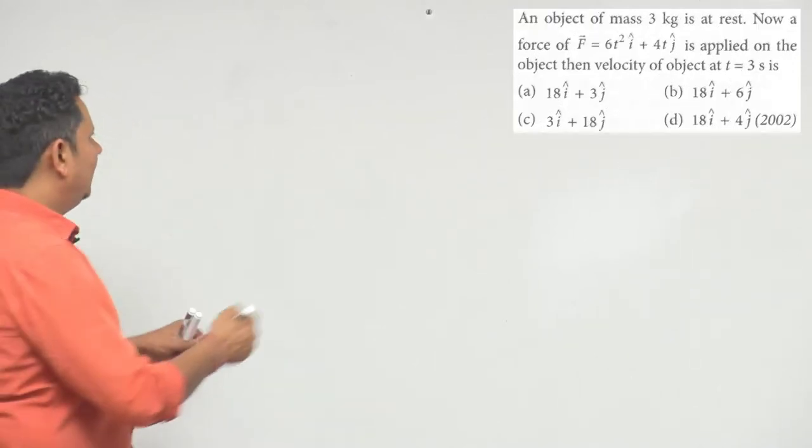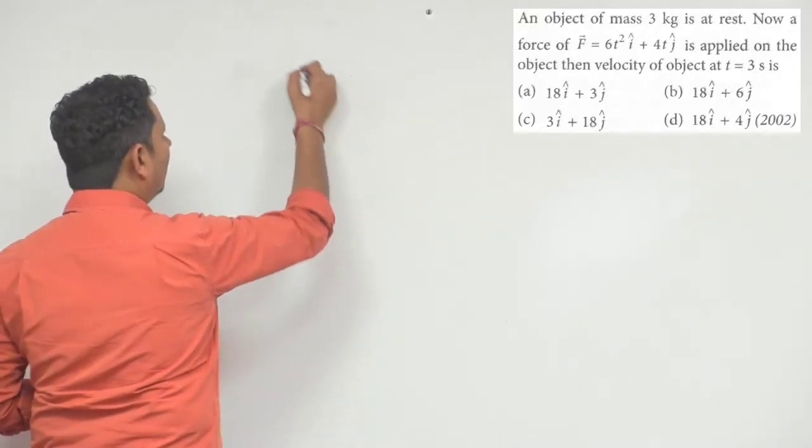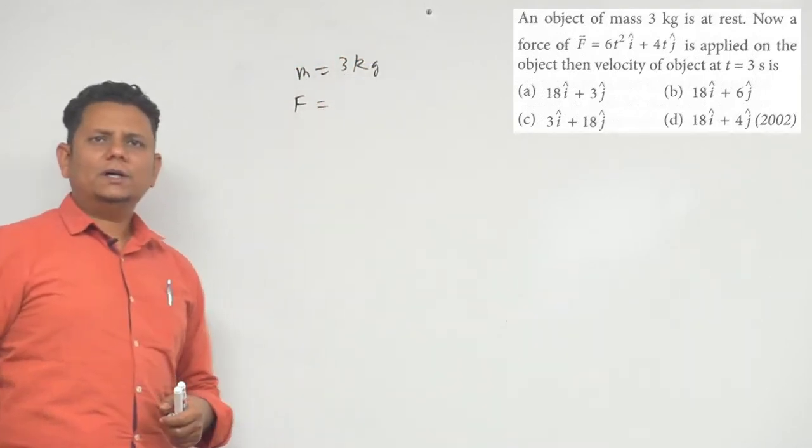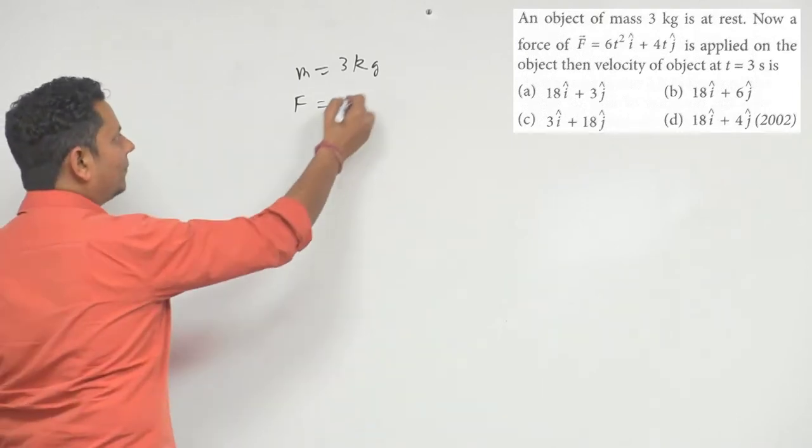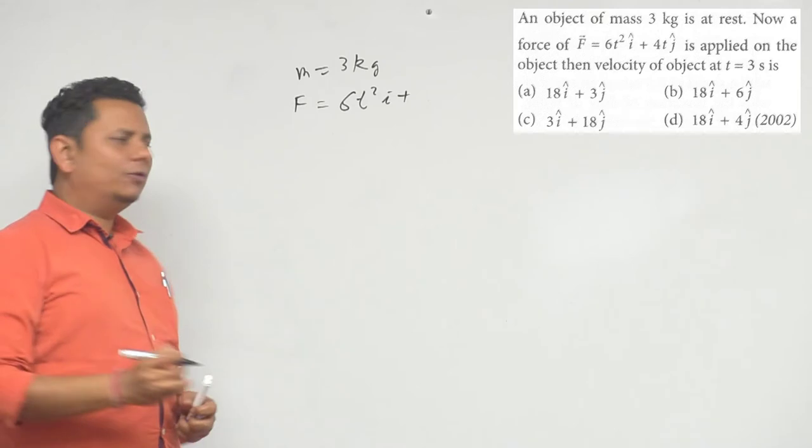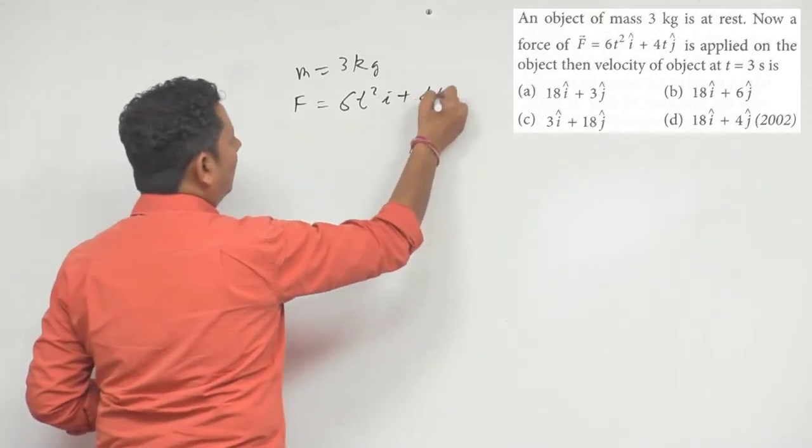This is a problem where you have a force given. First of all, mass is equal to 3 kg. The force is given by 6t²i cap plus 4tj cap. This is your force.